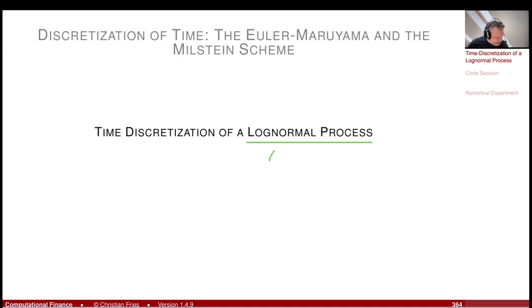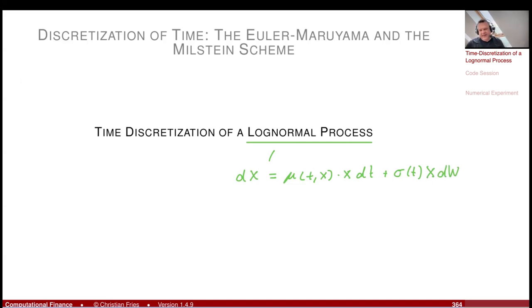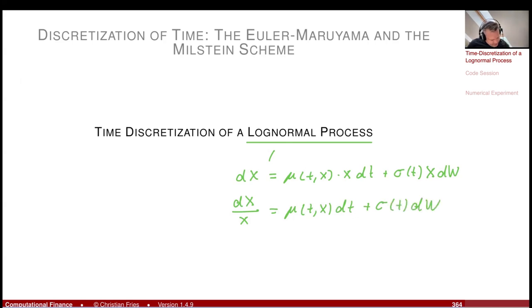This means I would like to have a stochastic process X where the mu has an additional X factor and the sigma depends on time and also has an additional X. So because then you can divide by X and you have mu dt plus sigma dw. I allow that these still depend on X because there are some models which are like that.